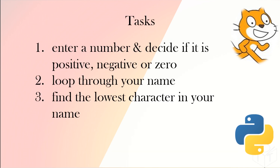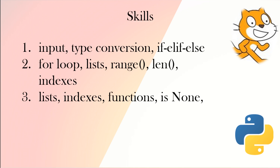In this video we've got three tasks. The first one asks the user to enter a number, then decide if it's zero, positive, or negative. The second task uses a list and a loop to see each letter and its index — basically listing through your own name. The third task finds the lowest character in your name, since A is less than B, which is less than C. Skills covered include input, type conversion, if/elif/else, for loop, list, range, length, indexes, functions, and the 'None' value.